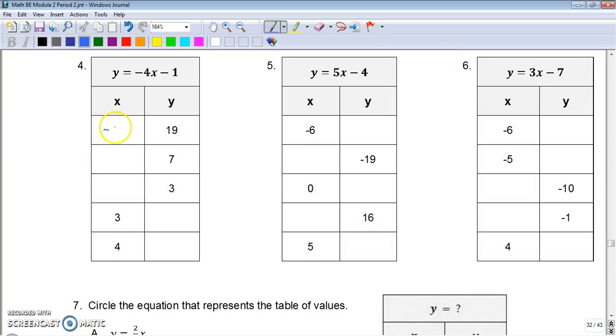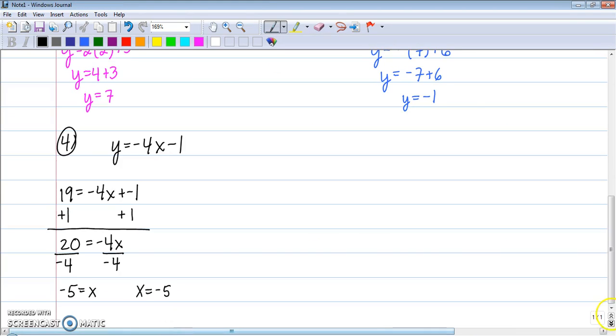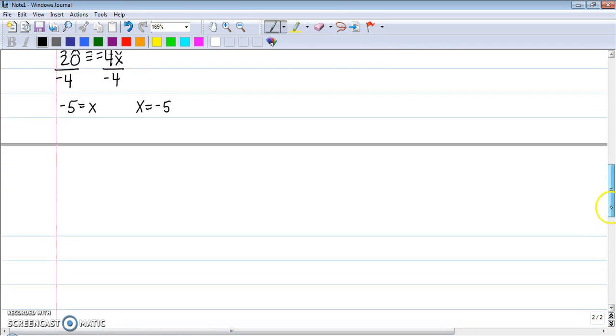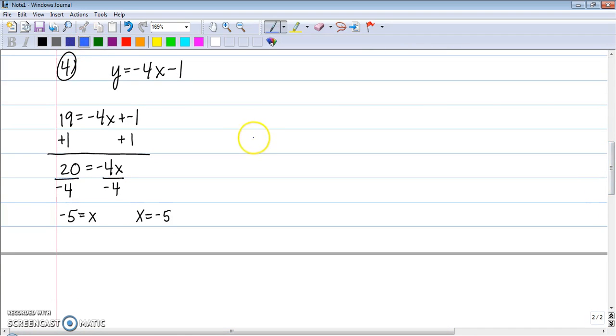So for some of these tables, we'll have to do some equation solving to find the missing parts. Next one we're going to do is it tells us that y is going to be 7, and we're going to solve for what x will be. So the equation solving steps are going to be the same, but the numbers on the left side are going to be different. This time 7 plus 1 is 8. Divide both sides by negative 4 like we did on the last one. And this time 8 divided by negative 4 is negative 2.